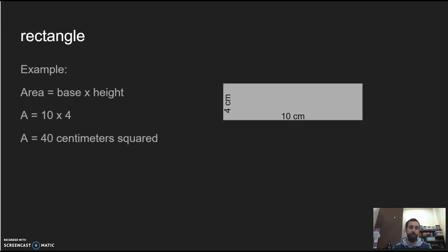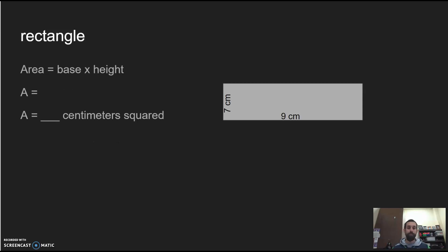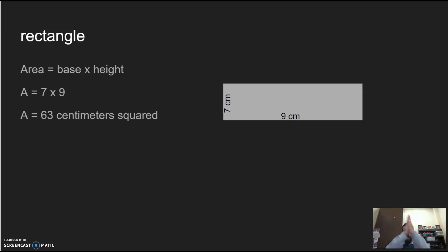Now let's move on to a rectangle — a little bit more difficult maybe, but it's still base times height. This time the base is 10 and the height is 4, so 4 × 10 = 40 centimeters squared. Now it's your turn on your own — the base is 9, the height is 7. If you got 63 centimeters squared, throw a party for yourself! We had to do 9 × 7 to find our answer.